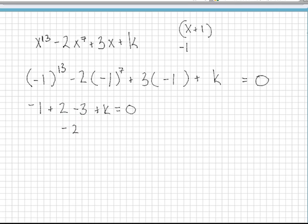you'll see that we get negative 2 plus k equals 0, which becomes a very easy algebra equation to solve. And we get k equals 2.